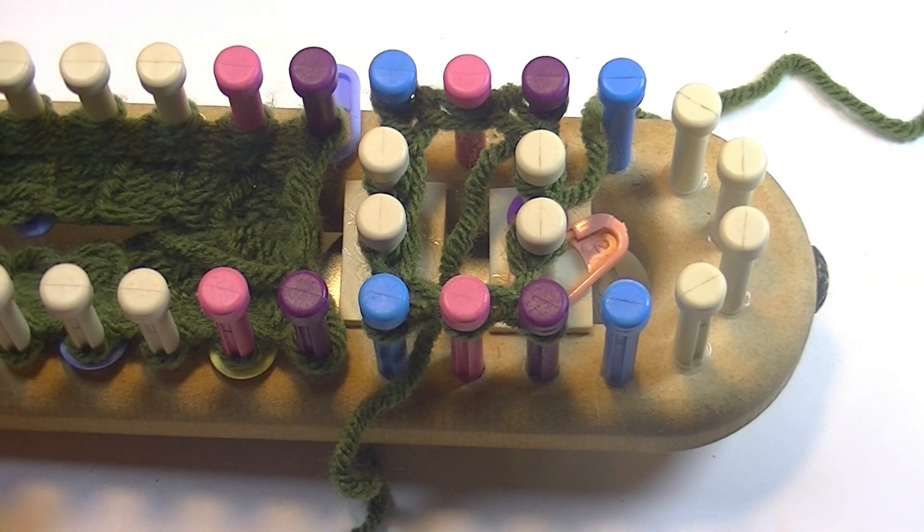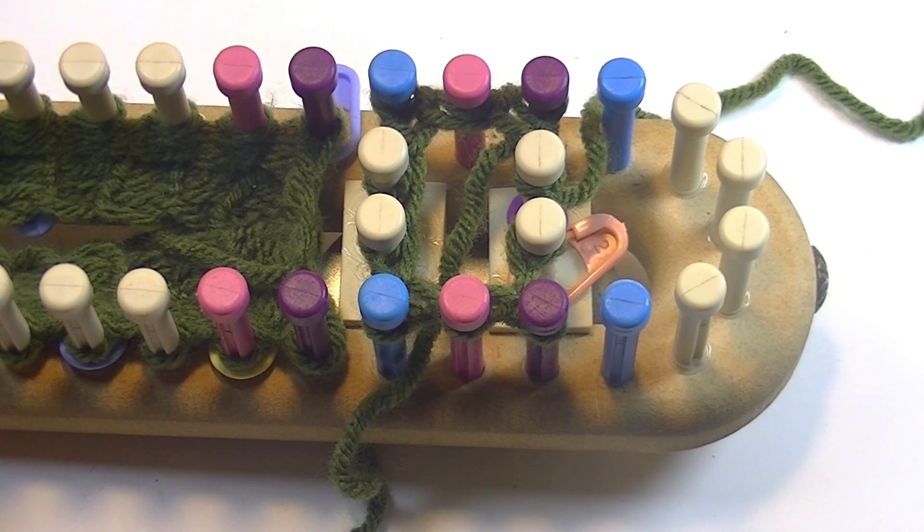Five rounds of single rib stitch, which is knit one, purl one, and then two rounds of knit stitch.